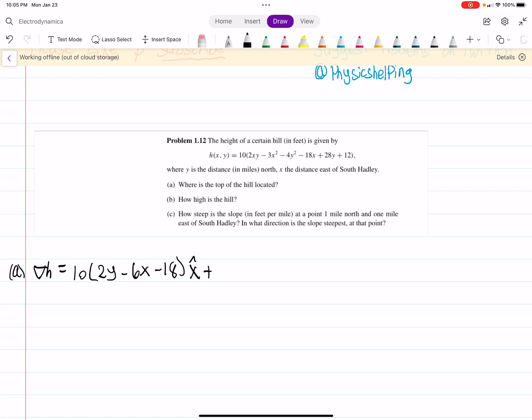And then we add to that the y component over here. So now when we do this, we get 2x minus 8y plus 28, and this is in our y hat direction. And I should mention, this 10 is distributed to all of that.